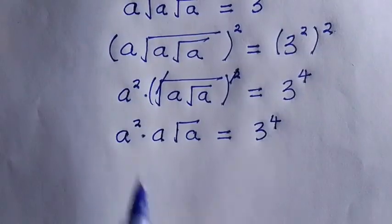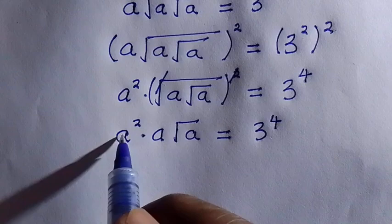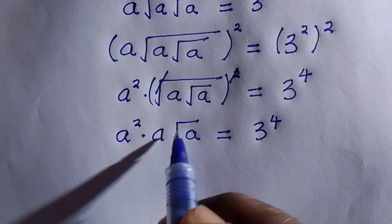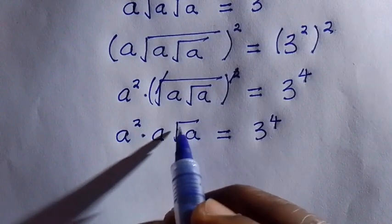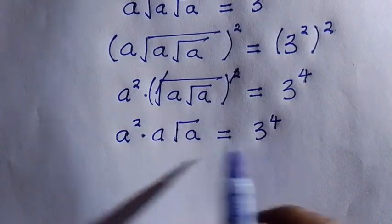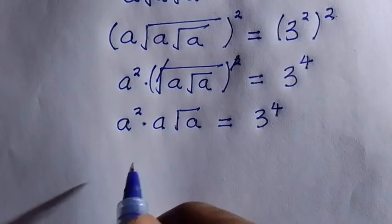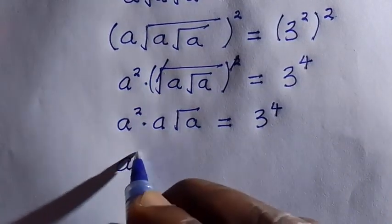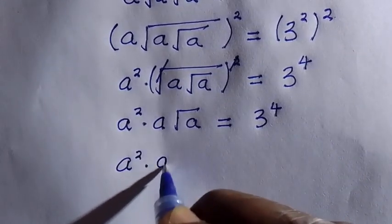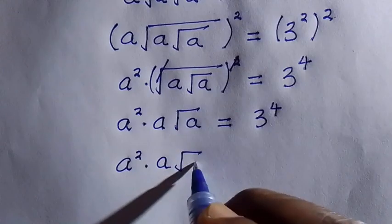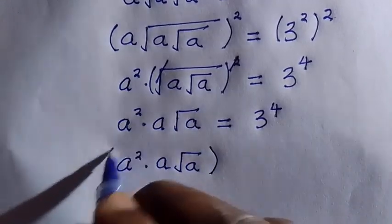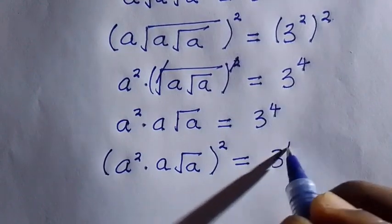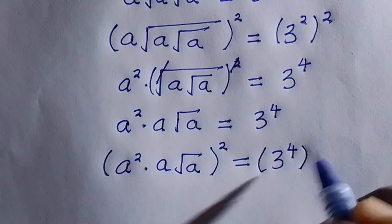So looking at this, we have a squared multiplied by a and this is root a. We want to get rid of this root again, so we have to take another square of both sides. Here we have a to the power of 2 multiplied by a root a, all raised to the power of 2 equals 3 to the power of 4 raised to the power of 2.